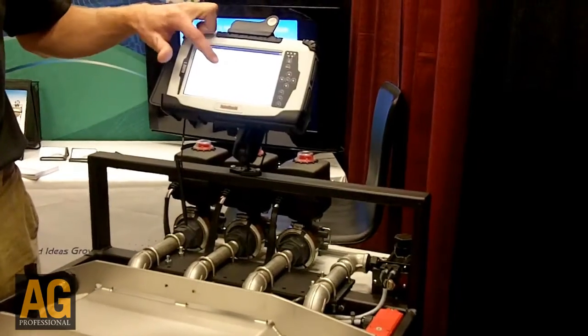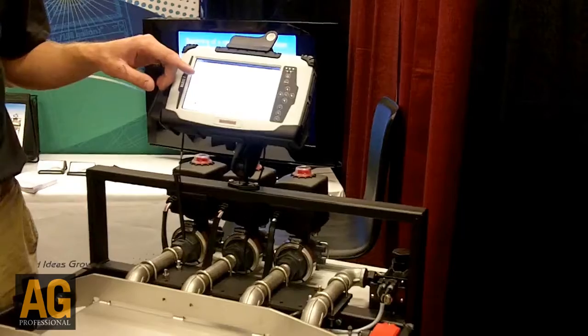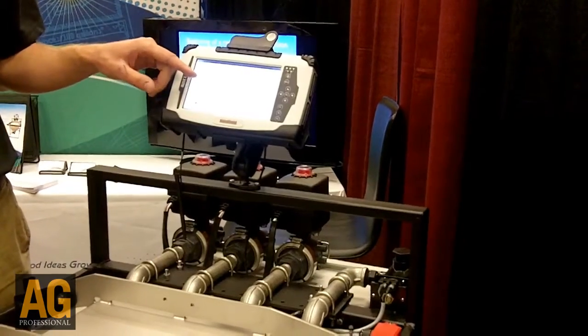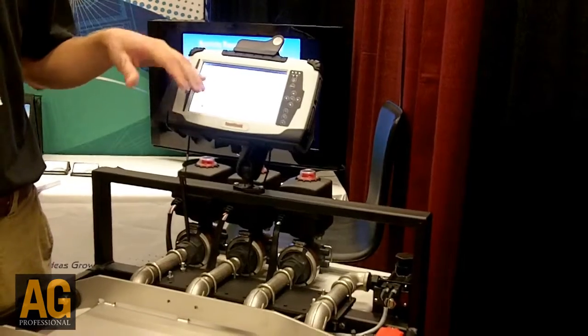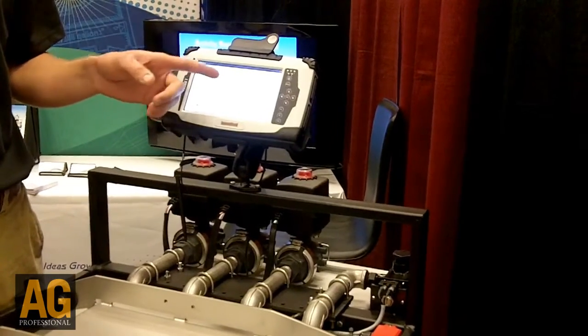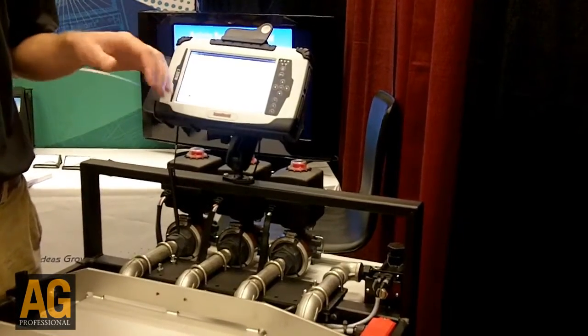When we go into the mix, we set up what prescription we're using, where it's coming from—either the field or the job number we're associating the batches with—how many gallons we're putting in the batch, how many acres we want that to cover, and what applicator we're running that through.